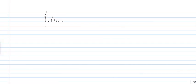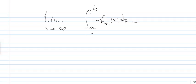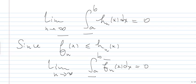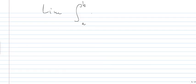So now, the Luxembourg theorem tells us that the limit as N goes to infinity of the lower Riemann integrals of HN(x) dx is equal to zero. Since F̄N(x) ≤ HN(x) and the FN bar are positive, we have that the limit as N goes to infinity of the lower integral of F̄N(x) dx is equal to zero. But since the F̄N are Riemann-integrable, therefore the limit of the integral from A to B of F̄N(x) dx is equal to zero.